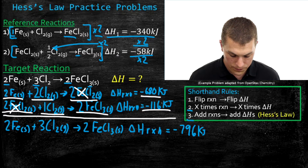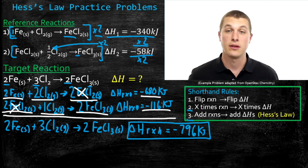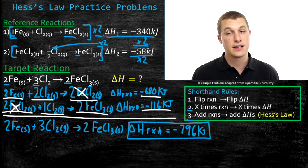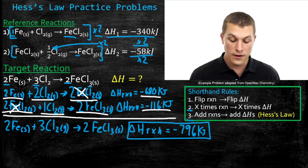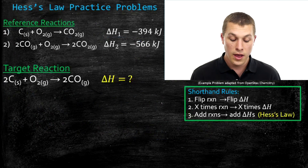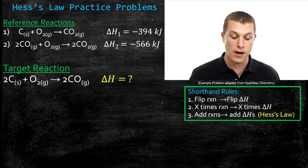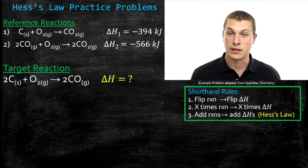Hess's Law allowed us to calculate the enthalpy of our target reaction by using our reference reactions. This is one of those things in chemistry that until you practice it a few times, it feels a little sketchy. Here's another practice problem — go ahead and pause the video, give it a try. It's okay if you mess up; the first time you try these, you usually do. Then we'll go through how to do it correctly.